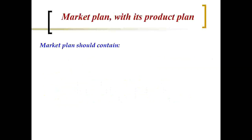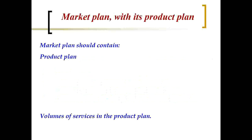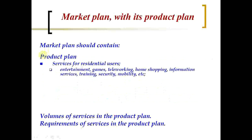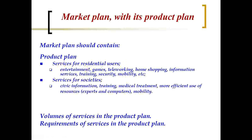The market plan and product plan: the market plan should contain the product plan, the volume of services, and the requirements of services — because without requirements you don't need to put anything there. The product plan needs to indicate services for users. For residential users, for example: entertainment, games, teleworking, home shopping, information services, training, security, and mobility. For societies: civic information, training, medical treatment, more efficient use of resources like experts and computers, mobility, and emergency services.